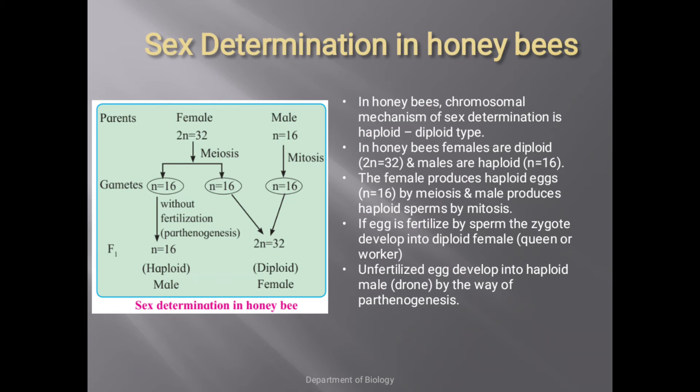In summary, females contain 32 chromosomes and males contain 16 chromosomes. Females undergo meiosis to produce gametes with 16 chromosomes each, and males undergo mitosis to produce 16-chromosome sperm. When a female gamete fertilizes with a male gamete, it produces a diploid female. Males are produced from unfertilized eggs by parthenogenesis. This concludes sex determination in humans, birds, and honeybees.